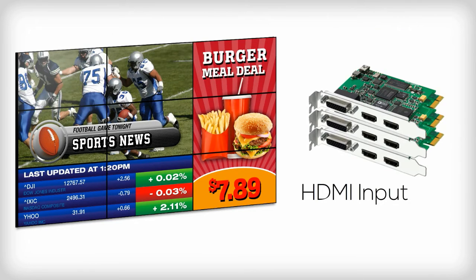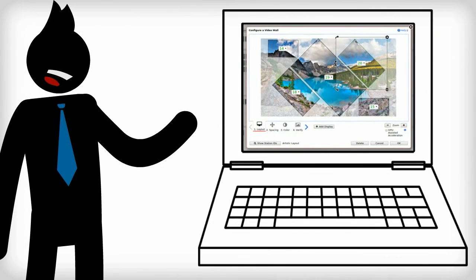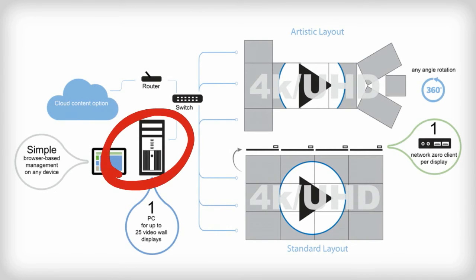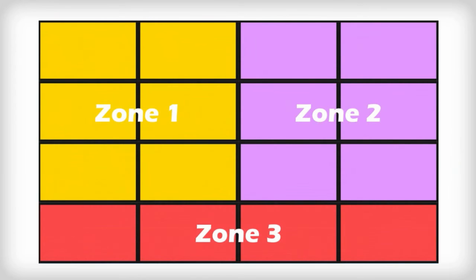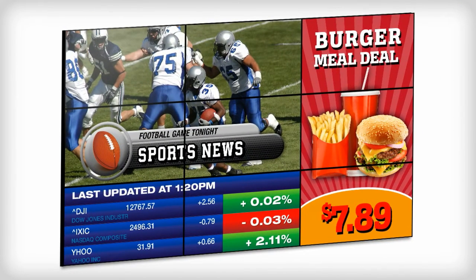Capture content using up to 8 HDMI input ports, or work with one of the content management systems natively integrated into the Userful solution. The PC running Userful can sit anywhere on the local area network and is entirely managed through a browser. Preset zones mean you can put different content on different areas of the video wall and change them on the fly.